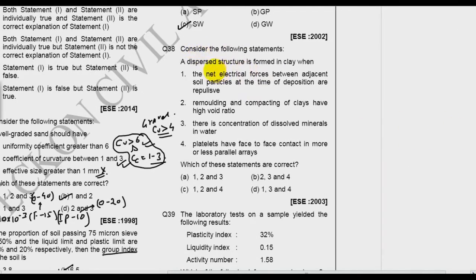Now question number 38. A dispersed structure is formed in clay when? Net electric force between adjacent soil particles at the time of deposition are repulsive. So what is dispersed structure? It is like this, an array of face to face. If the force is negative then it will become a flocculated structure. So this is the right answer option.